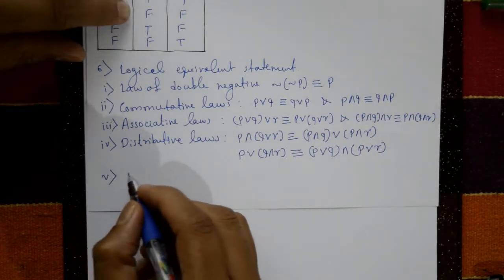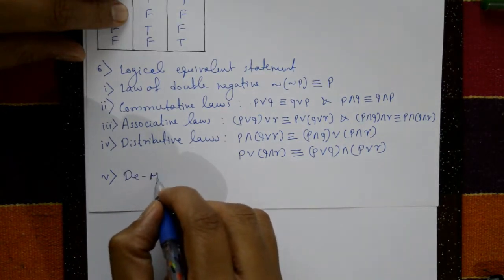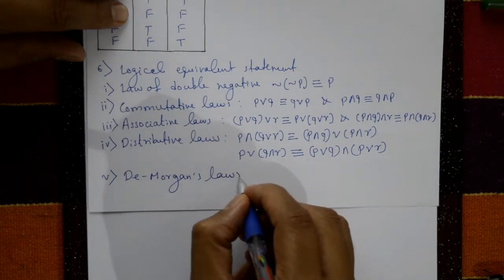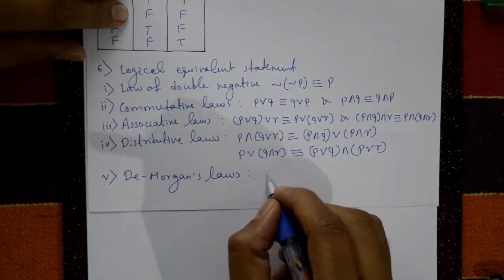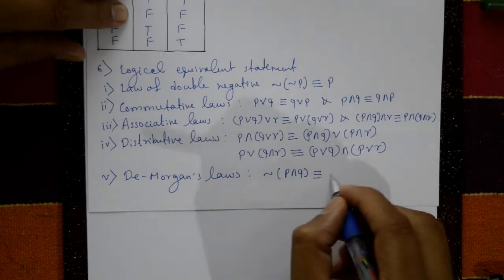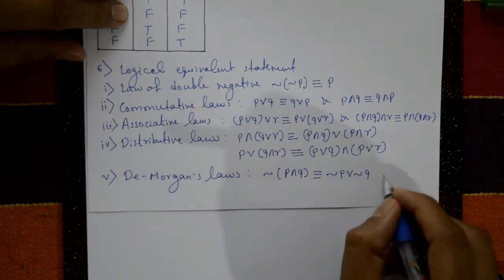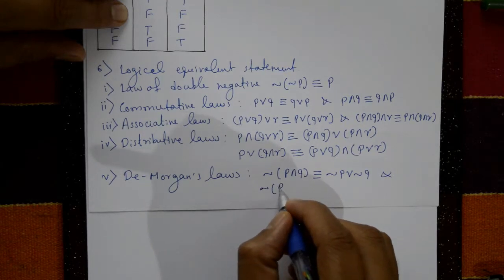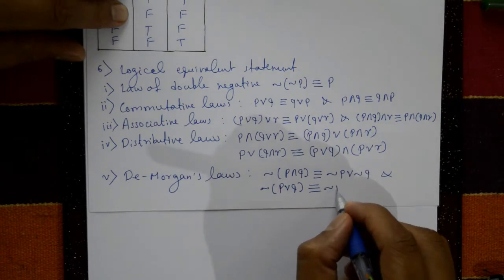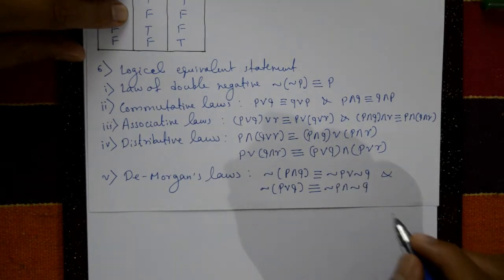Fifth one: De Morgan's laws. The negation of (P disjunction Q) is equivalent to negation P conjunction negation Q. And the negation of (P conjunction Q) is equivalent to negation P disjunction negation Q.